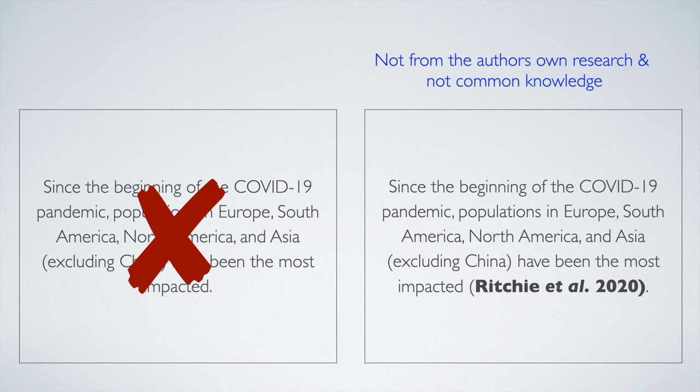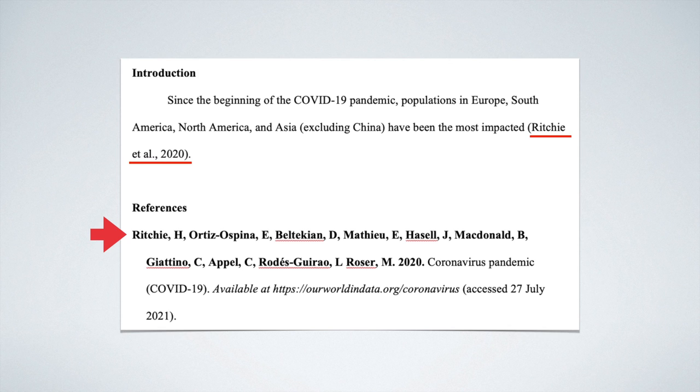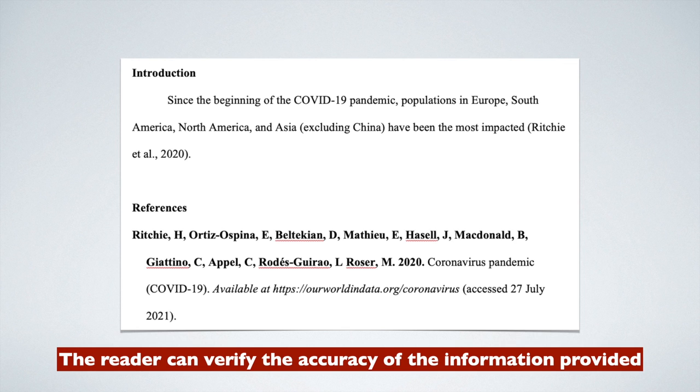Number two, we cite the research of others to allow the reader to be able to identify, find and read the source. Here is the same sentence and I have cited Richie et al. 2020. When you cite any source in your own writing, you need to provide the full details in the reference section of the paper. By providing the full details of the source in the reference section, the reader can identify, find and read the source. And then the reader can verify the accuracy of the information provided for themselves.